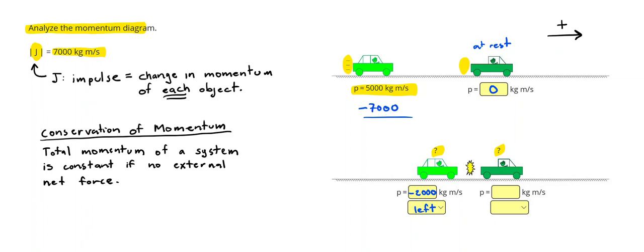So the momentum of the truck started out at zero. Now that truck is going to experience a force to the right, so we're going to add the impulse here, or add 7,000. And that's going to give the truck a momentum of 7,000 kgm per second. The positive answer and common sense tells us that that truck is going to end up going to the right.